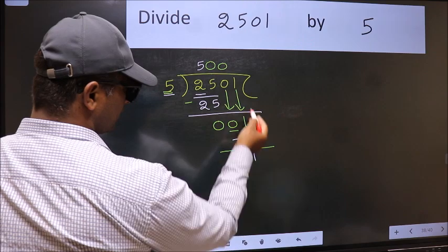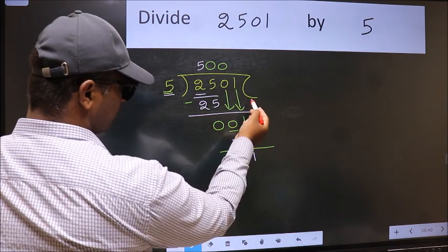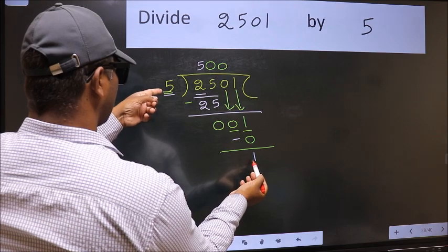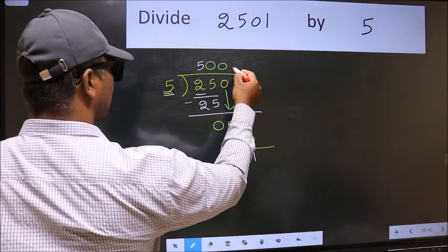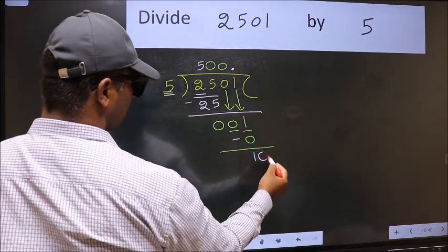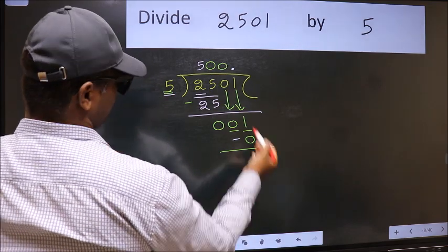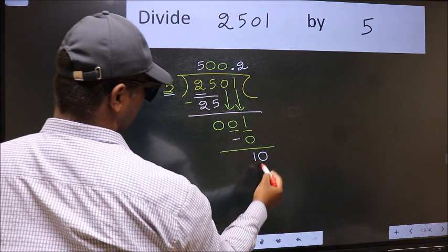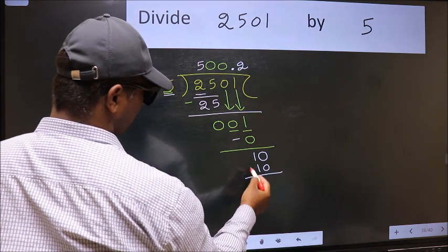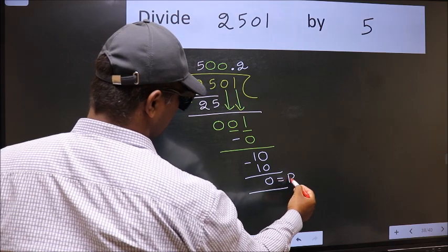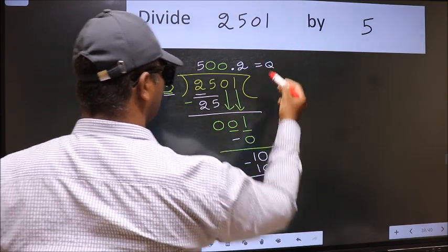Over here, we did not bring any number down, and 1 is smaller than 5. So now we can put a dot and take 0. So, 10. When do we get 10 in the 5 table? 5 times 2 is 10. Now we should subtract and get 0. This is our remainder and this is our quotient.